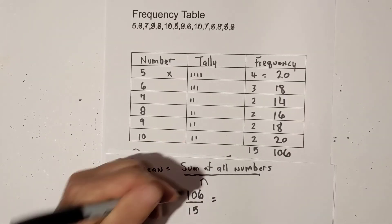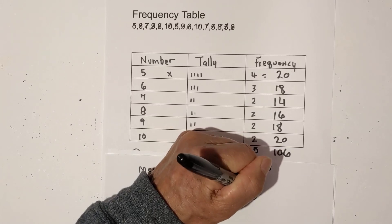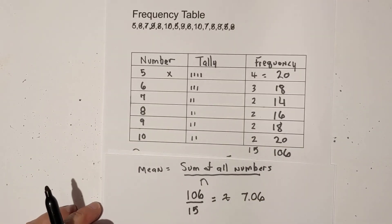And when you divide that, it is approximately 7.06, and that would be your mean, and some people look at that as the average.